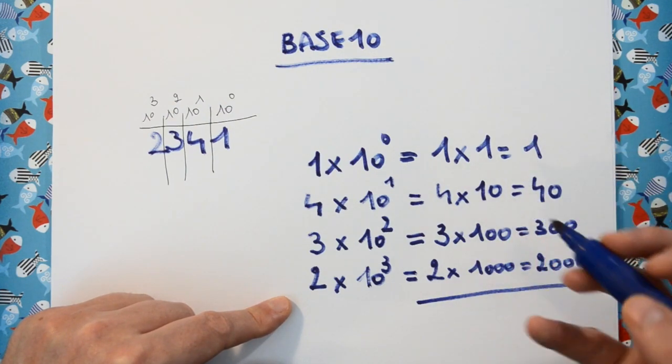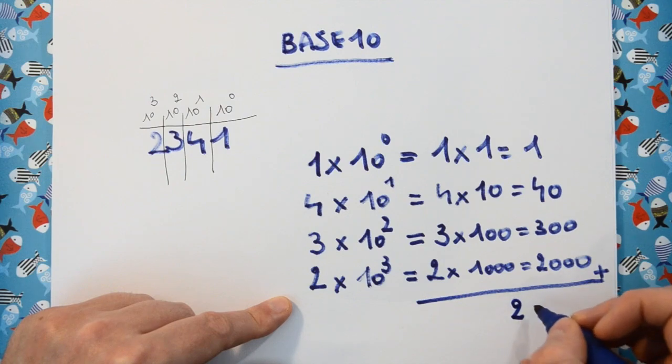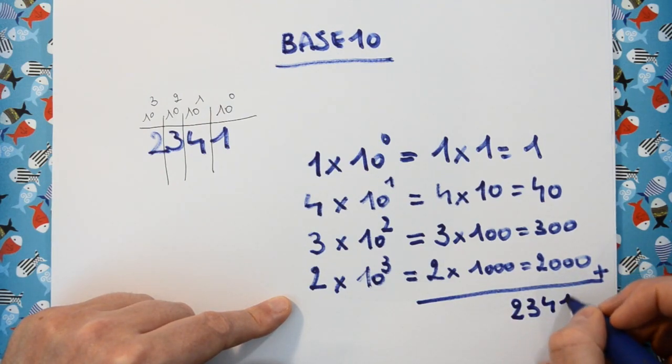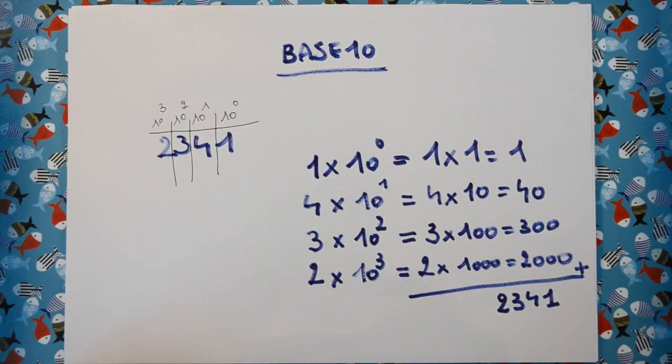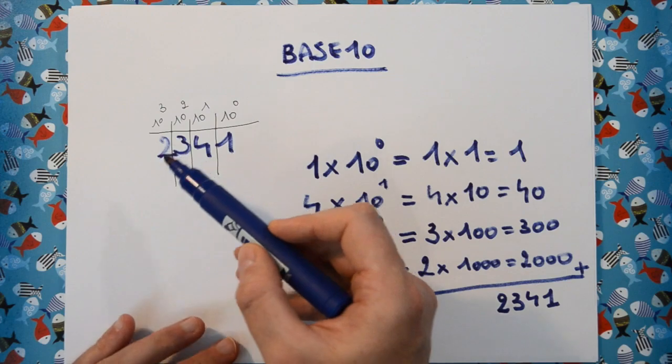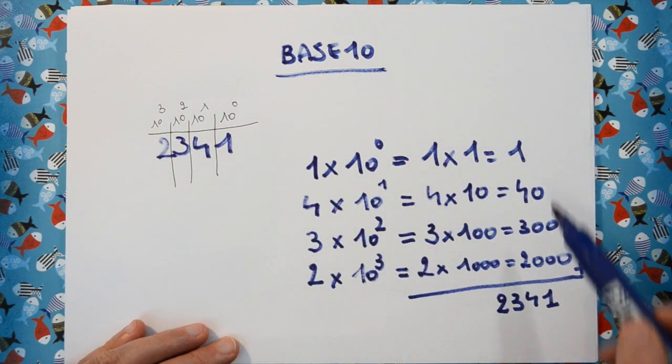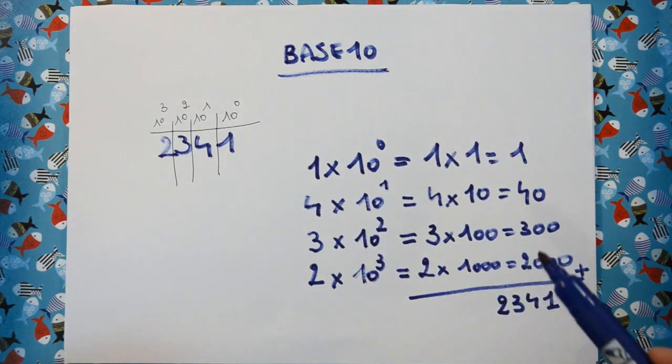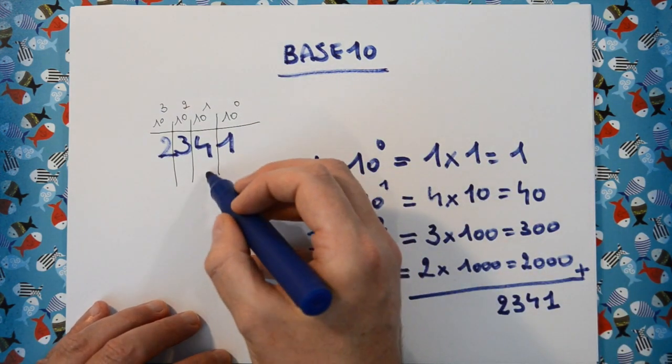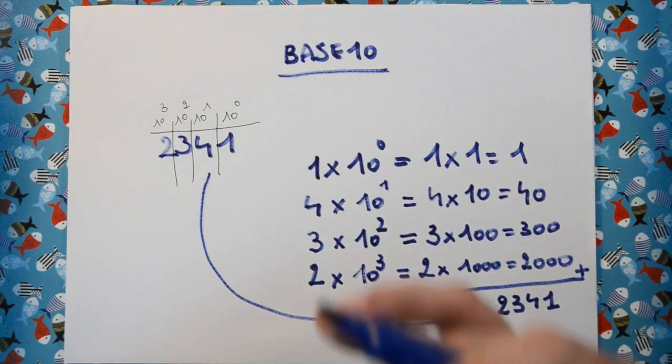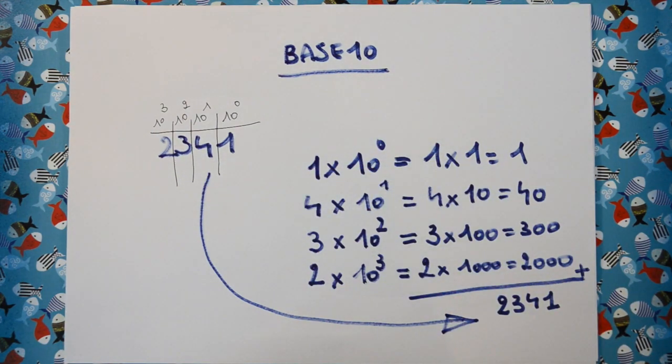And now if we add these numbers, we end up with 2,341. Now of course it's completely ridiculous. We don't have to calculate using this technique that 2,341 equals 2,341 in base 10, because the number is already in base 10.